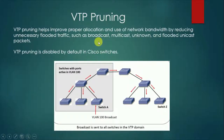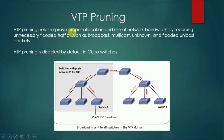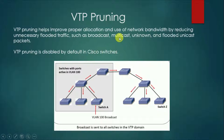VTP pruning is something which is there in VTP for proper utilization of everything. When we talk about VTP and switches, VTP pruning helps improve proper allocation and use of network bandwidth by reducing unnecessary flooded traffic such as broadcast traffic, multicast traffic, unknown and flooded unicast packets. VTP pruning is disabled by default in Cisco switches.